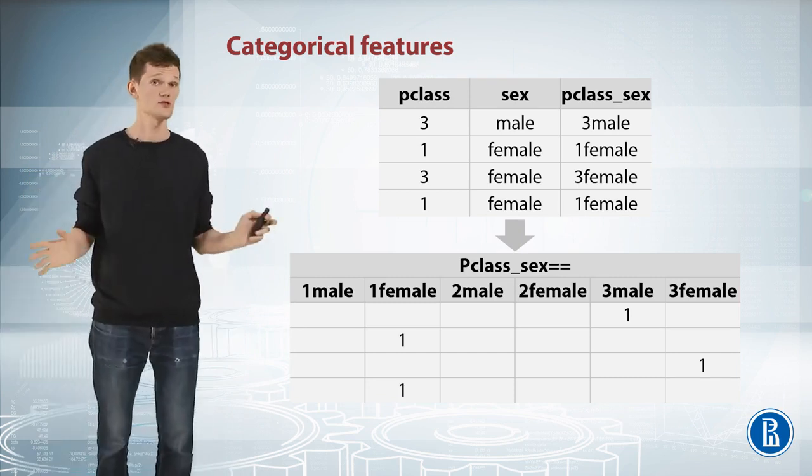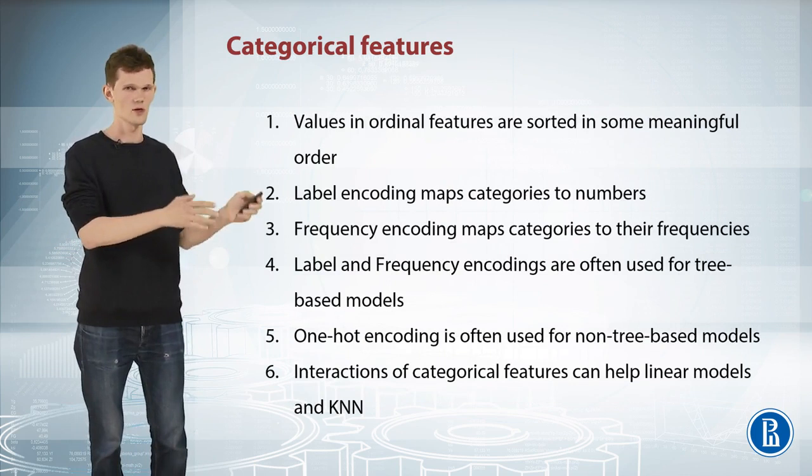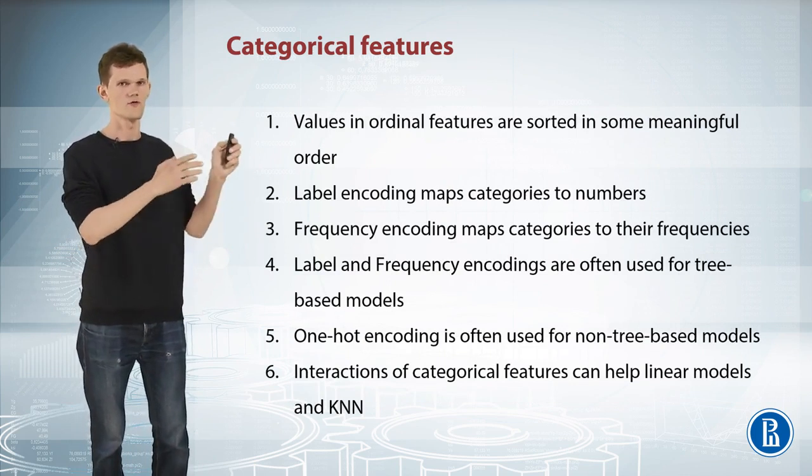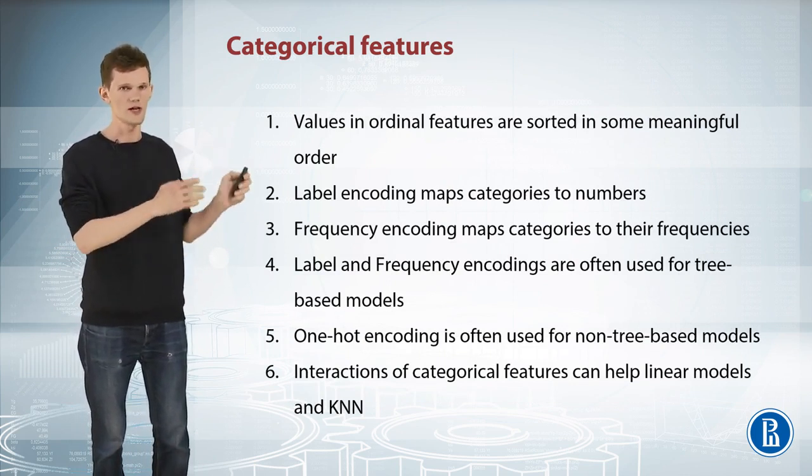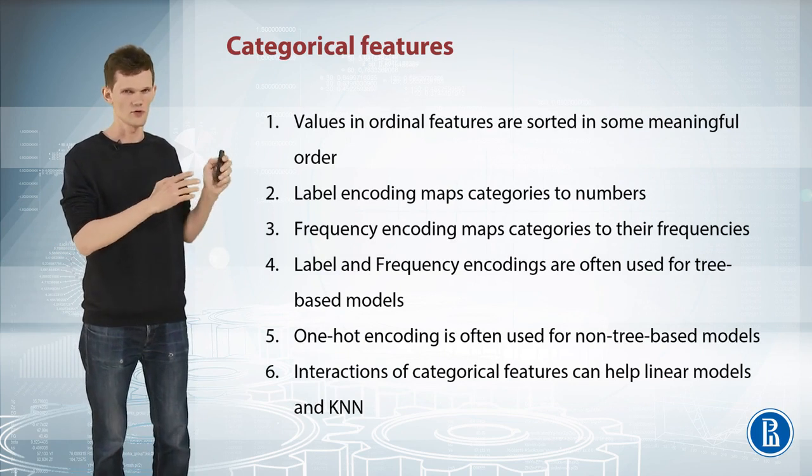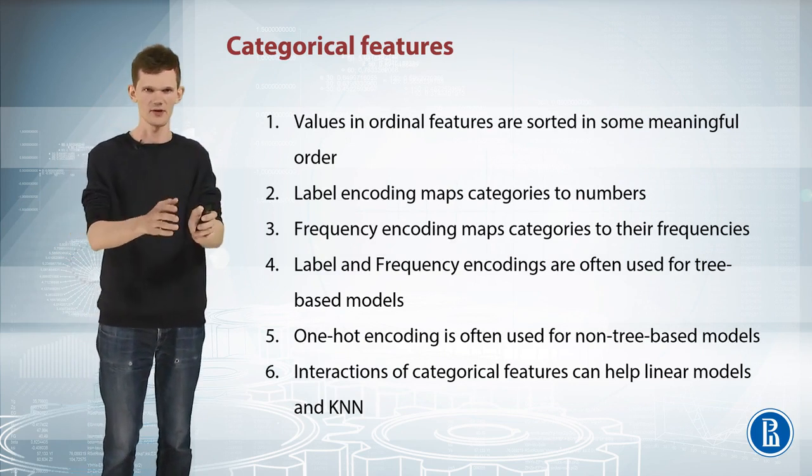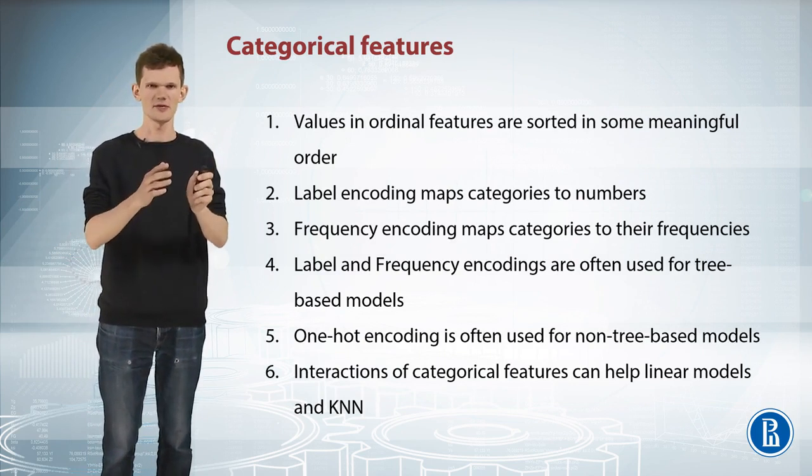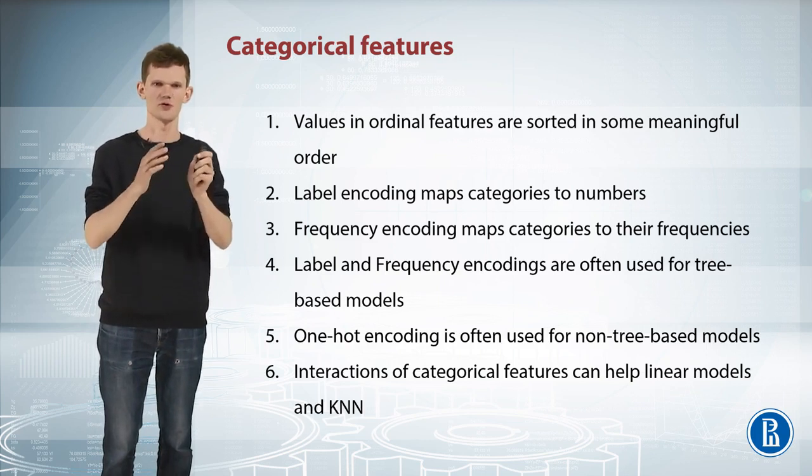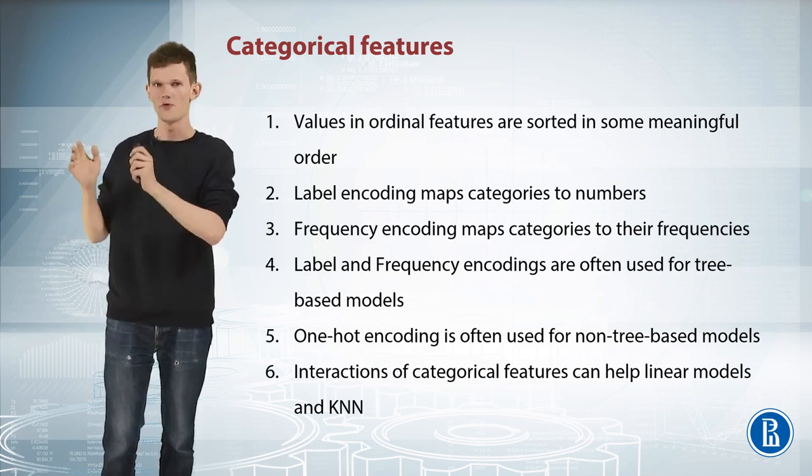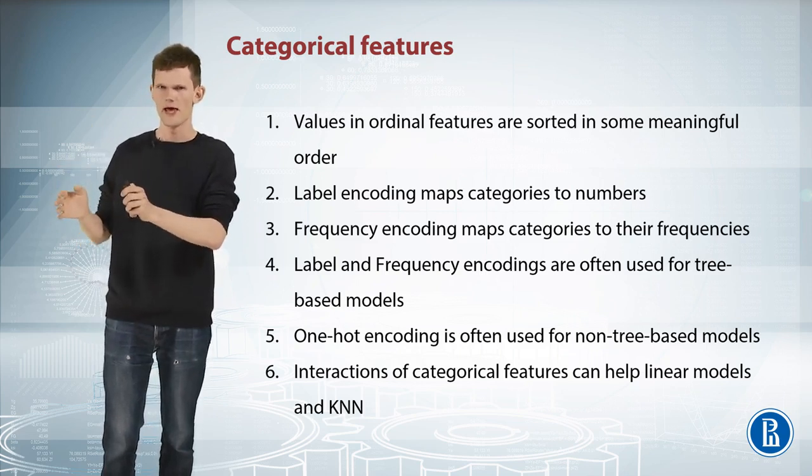Now let's summarize this video. First, ordinal is a special case of categorical feature, but with values sorted in some meaningful order. Second, label encoding basically replaces unique values of categorical features with numbers. Third, frequency encoding in its turn maps unique values to their frequencies.